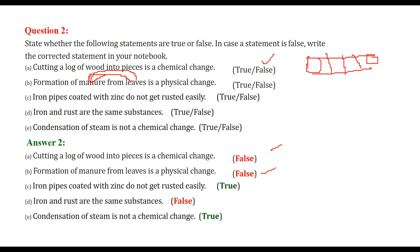Iron pipes coated with zinc do not get rusted easily - this is true, because the coating of zinc on iron pipes does not allow water vapor and oxygen to combine with iron to form rust. Iron and rust are the same substances - this is false, because iron and rust have different chemical compositions. When iron combines with oxygen and water vapor, it forms rust, which has a different chemical combination.